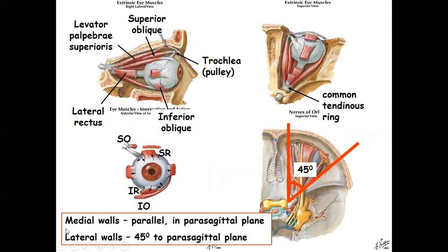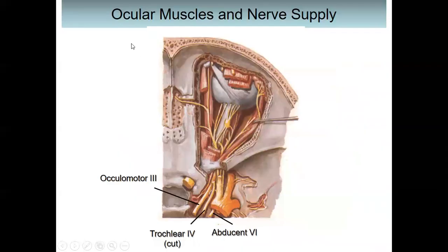The medial wall of the orbit is parallel to the parasagittal plane, and the lateral wall is at 45 degrees to the parasagittal plane. We also have the common tendinous ring and the third, fourth, and sixth cranial nerves entering the optic canal.